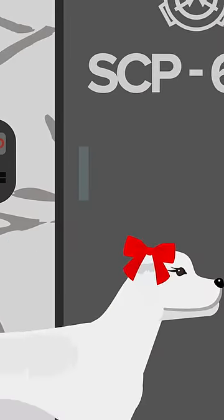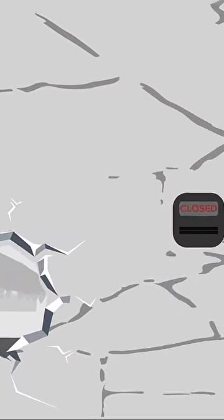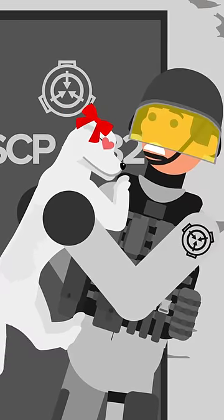SCP-3042 charged through a nearby wall, thankfully making a hole too small for SCP-682 to escape through, and imprinted on a nearby guard. Another test failed.